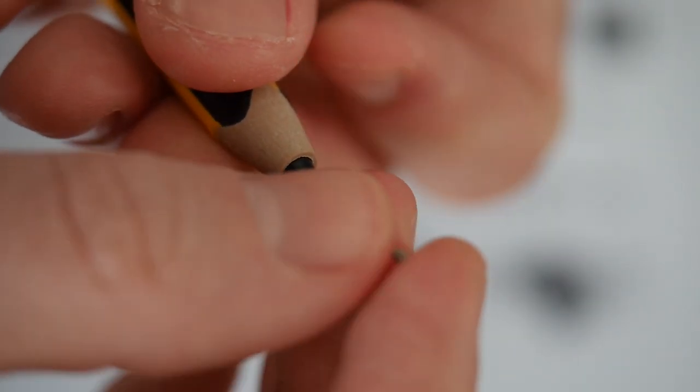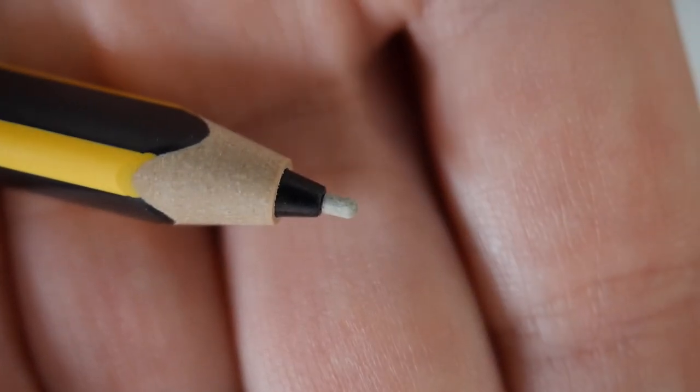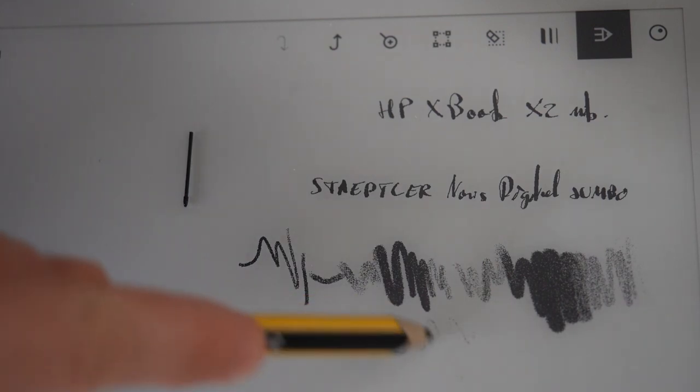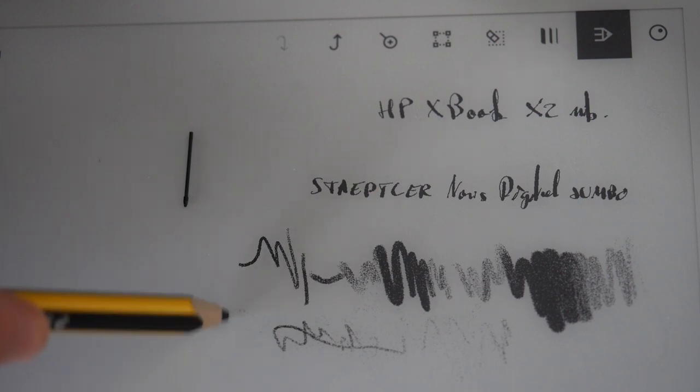The problem is that if you try to put one of these nibs in the Jumbo, this happens. You can see that the pressure and tilt sensitivity is not working properly.